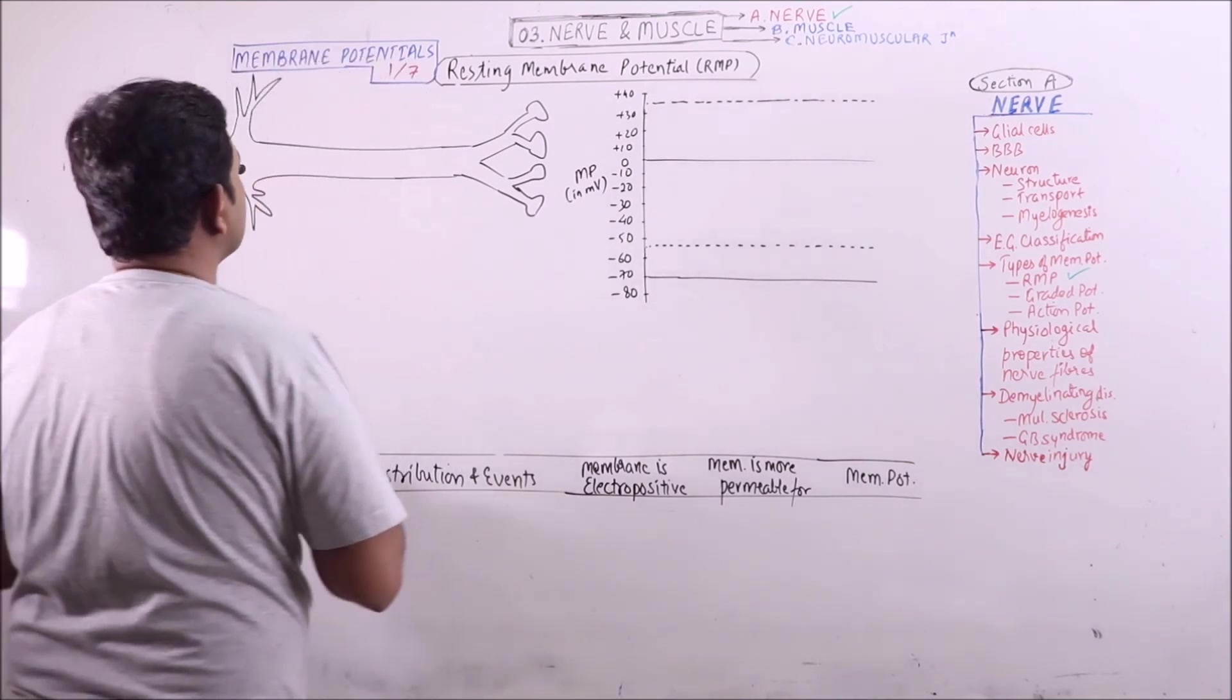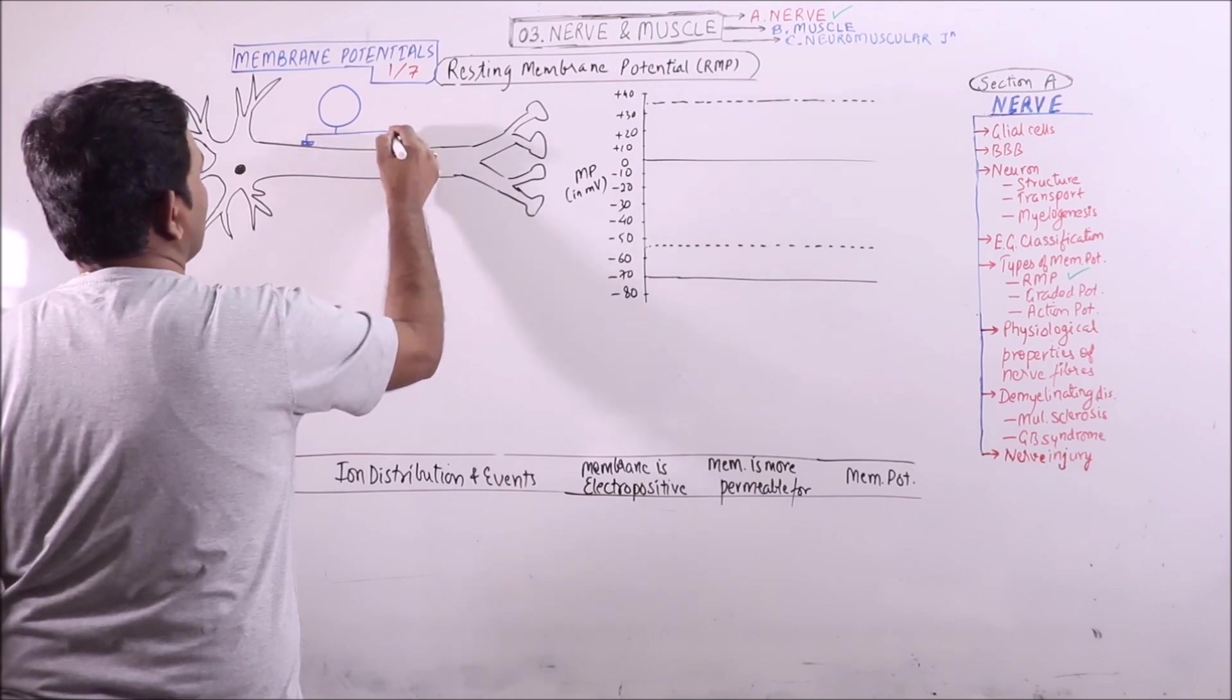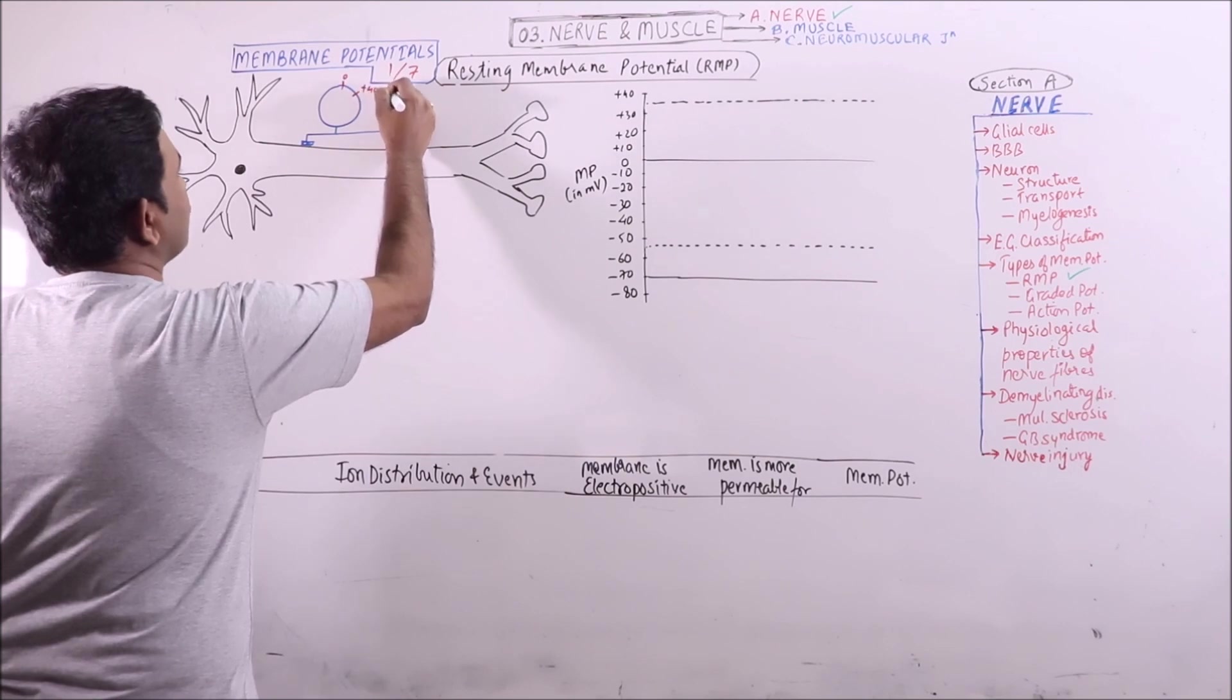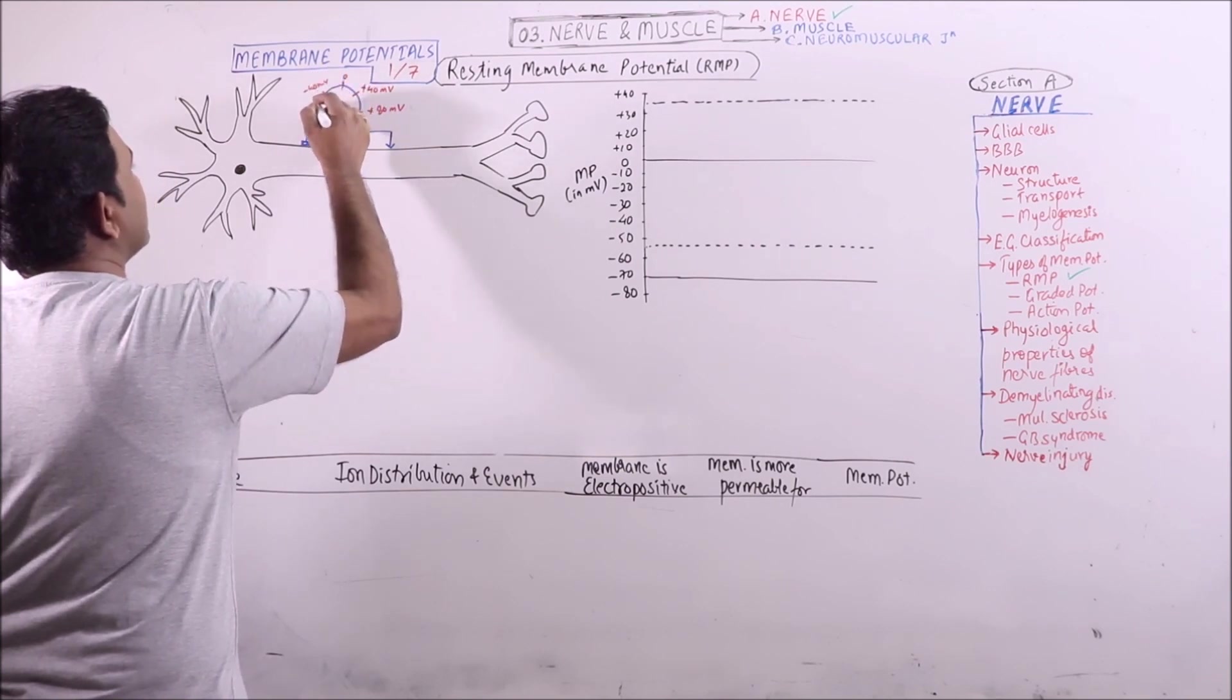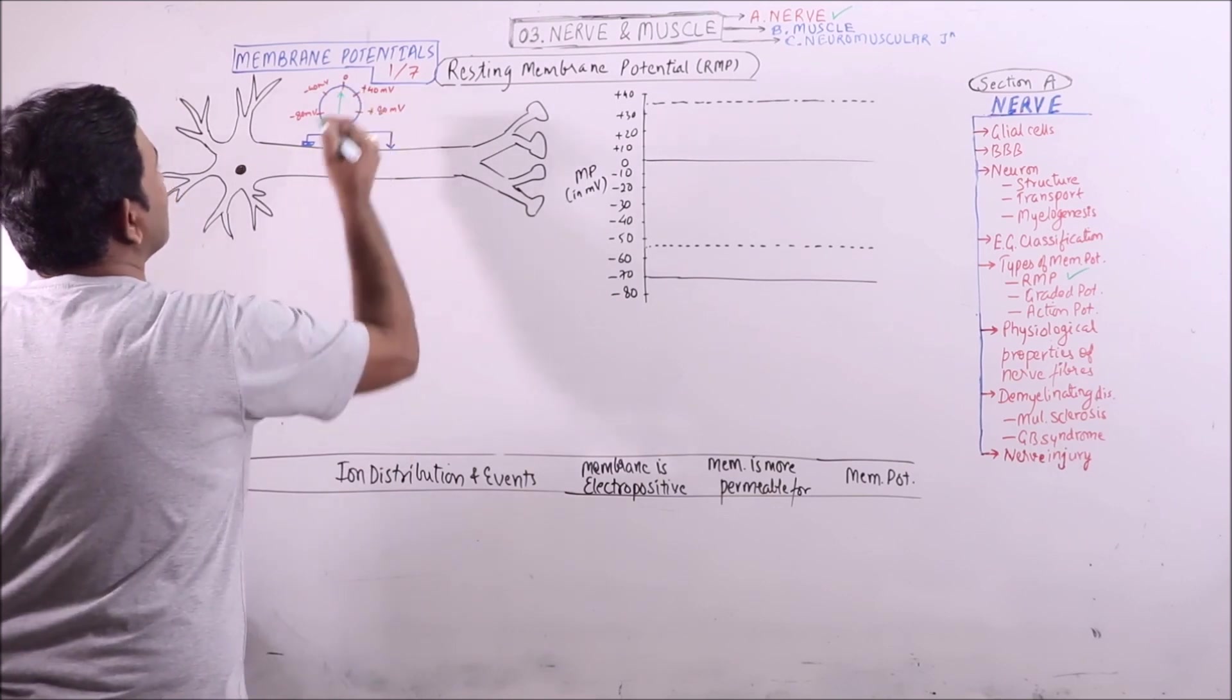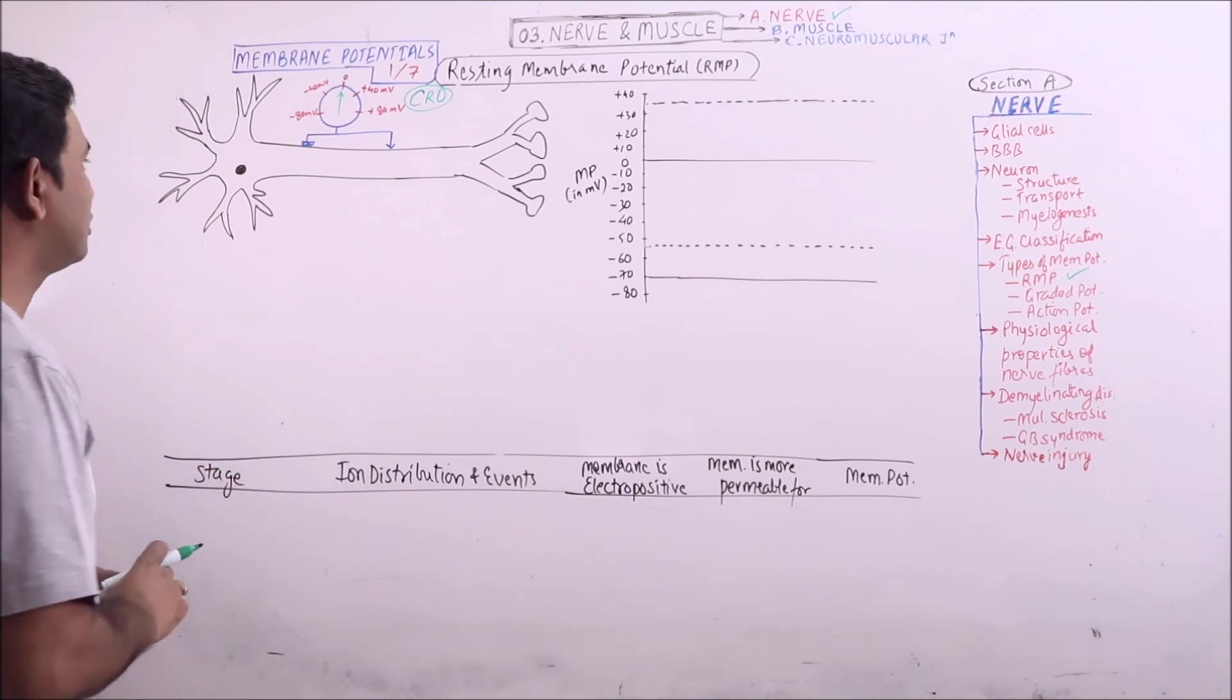If we place the two electrodes of cathode ray oscilloscope on the exolemma (0 millivolts, plus 40 millivolts, plus 80 millivolts, minus 40 millivolts, minus 80 millivolts), then the zero reading will be observed. This is cathode ray oscilloscope. It gives zero reading when both the micro electrodes are placed on the membrane.